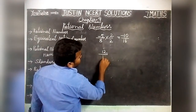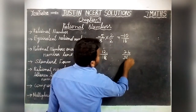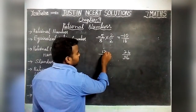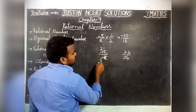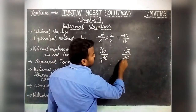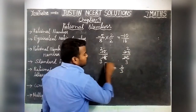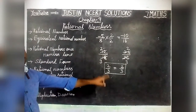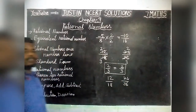We can also check with another example: 12 by 18 and 24 by 36. These are equivalent Rational Numbers. We can simplify by 6: 6 into 2 are 12, 6 into 3 are 18. And by 12: 12 into 2 are 24, 12 into 3 are 36. So 2 by 3 equals 2 by 3 — the ratios are equal. Therefore, 12 by 18 and 24 by 36 are called Equivalent Rational Numbers.